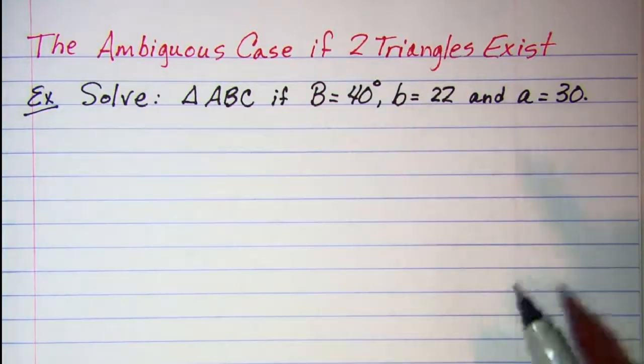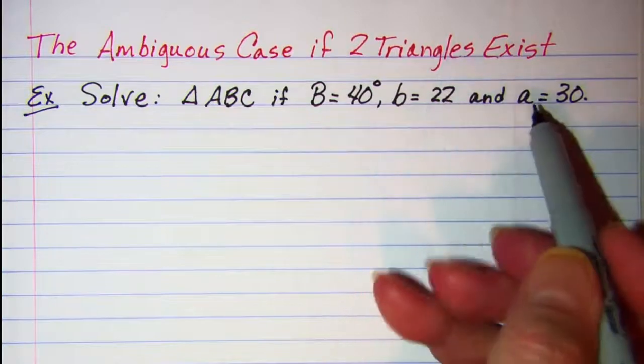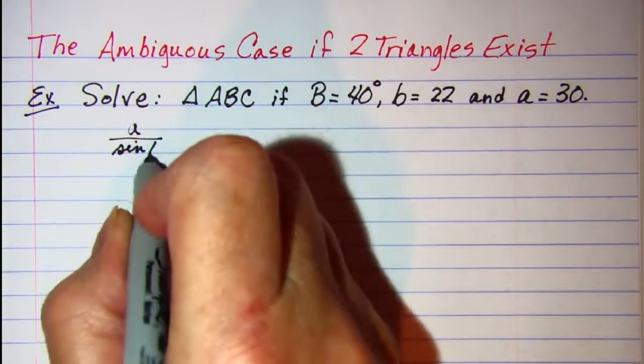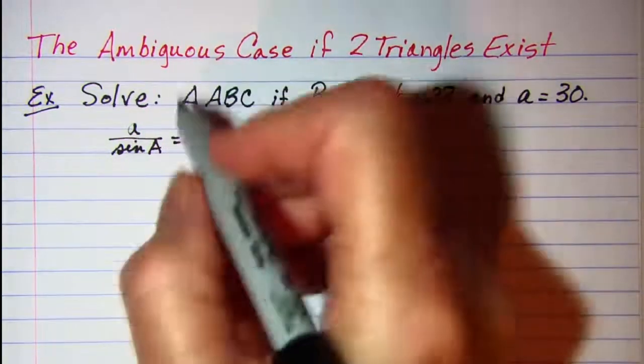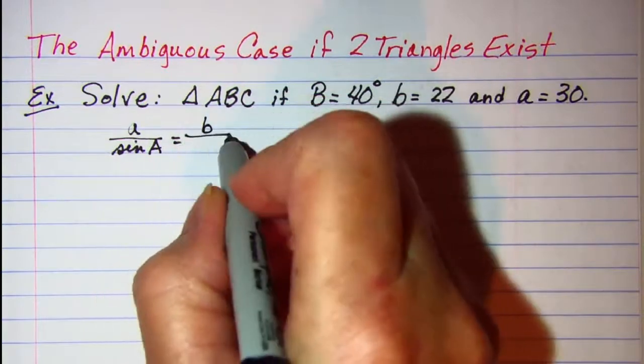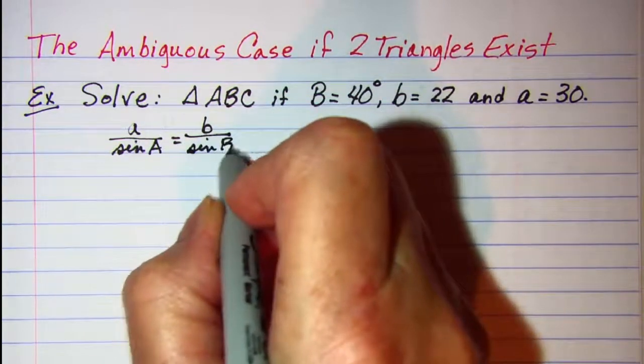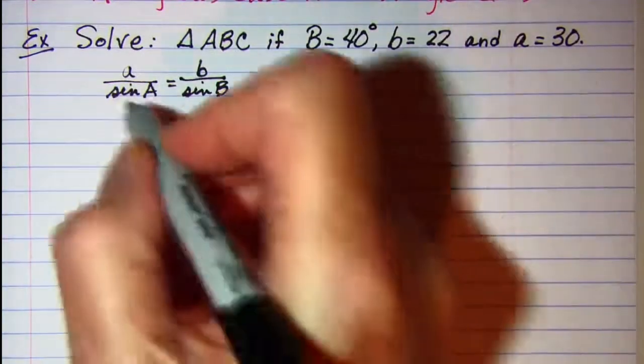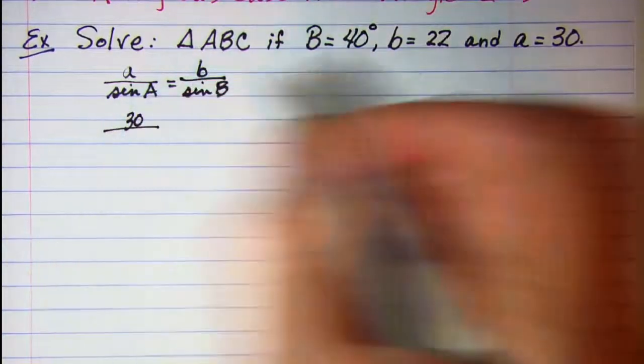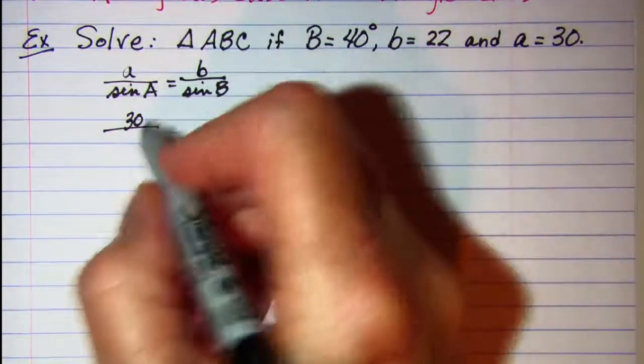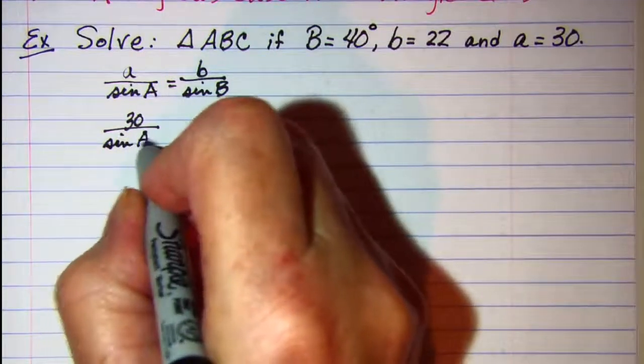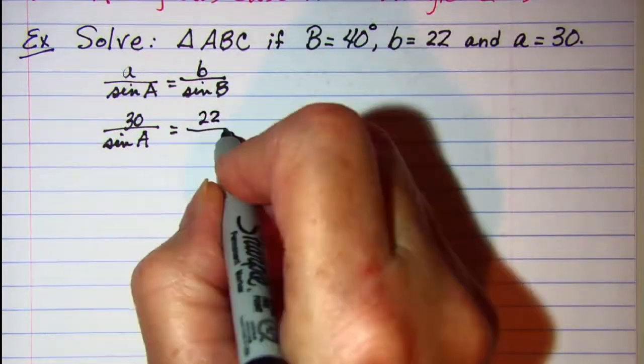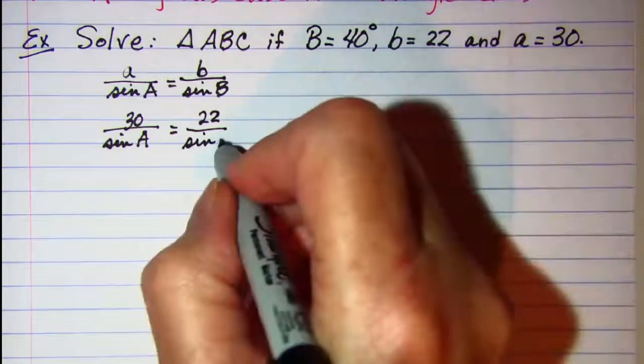So we're going to set up the law of sines. We have A is to the sine of A as B is to the sine of B. Now let's fill in our values. A is 30 and I don't know angle A so I'll keep the variable. Side B is 22 and sine of angle B which is 40.